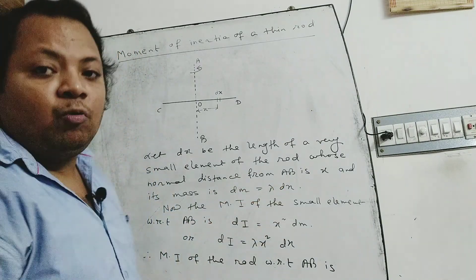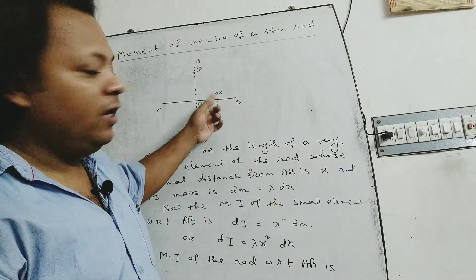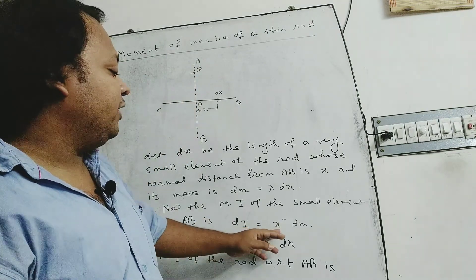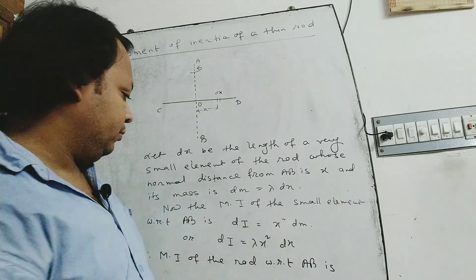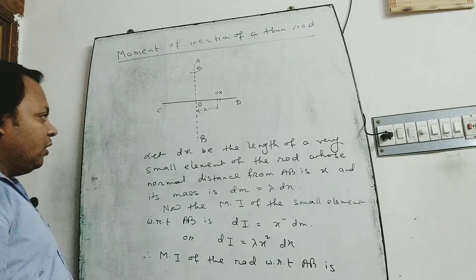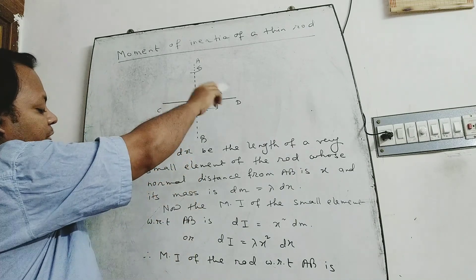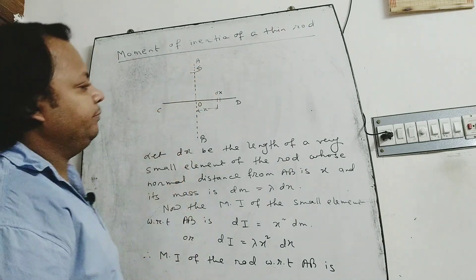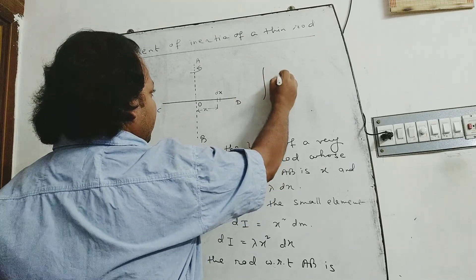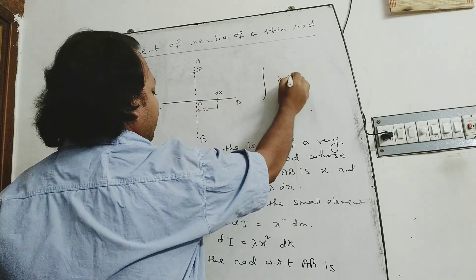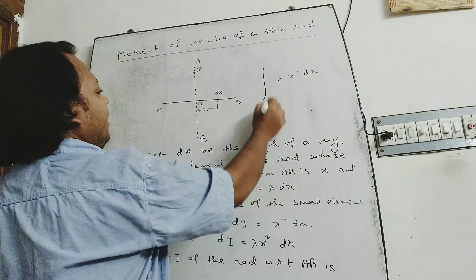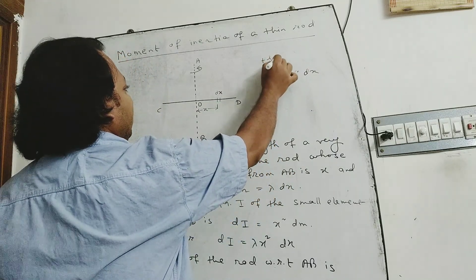Let dx be the length of a very small element of this rod at a distance x from the axis AB. The moment of inertia of this small element with respect to axis AB is dI equal to x squared into dm, or dI equal to lambda x squared dx. Therefore, the moment of inertia of the rod is the integration of lambda x squared dx, with lower limit minus L by 2 and upper limit plus L by 2.